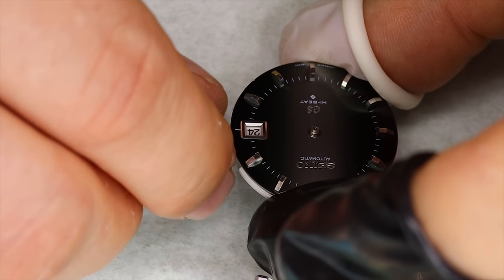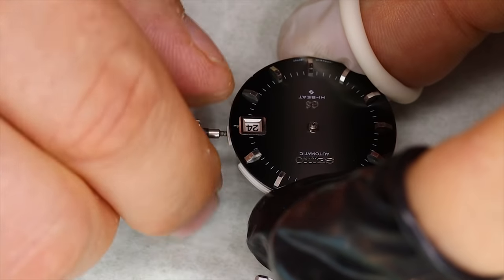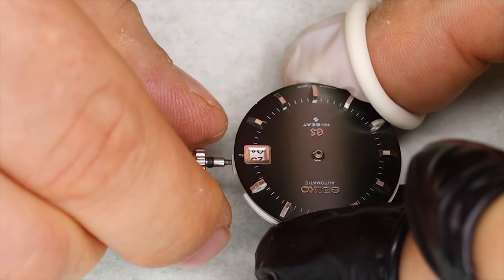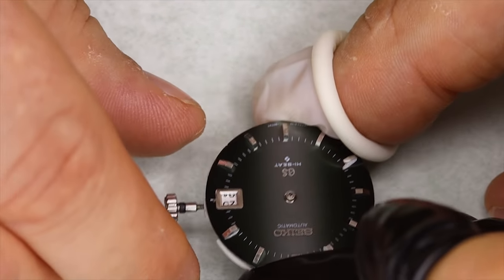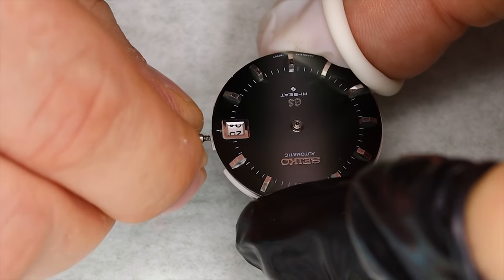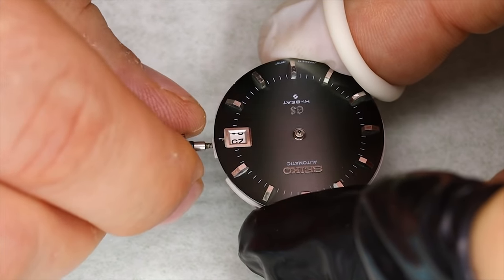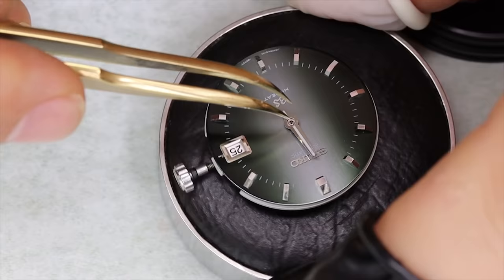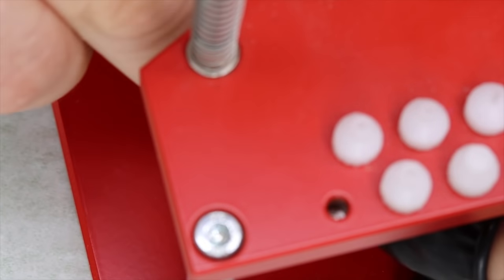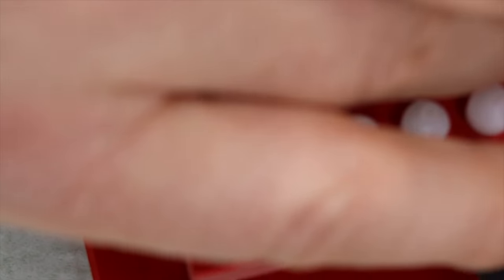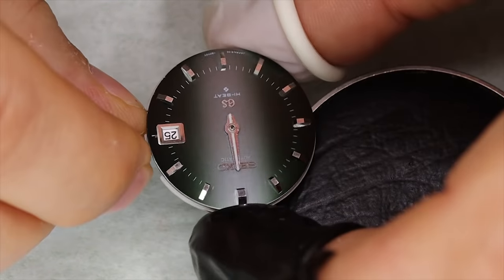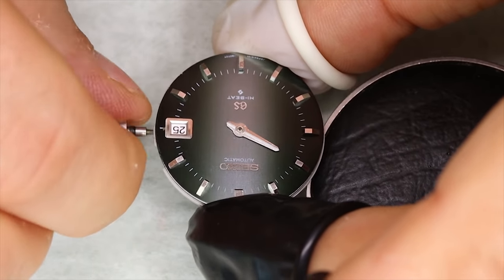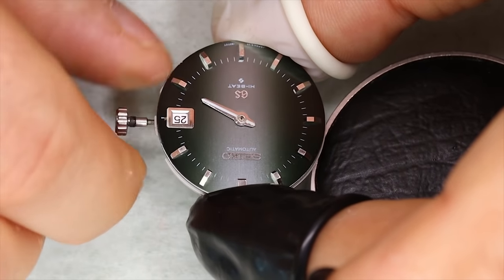Again testing to see that everything works after we put the dial on. One thing to pay particular attention to is that the dial hole is centered, so that the cannon pinion, the hour wheel and so forth, the tubes sticking out in the middle, are in the middle. If they're not, then you risk that the dial actually presses on the hands and either stops them or makes them run irregularly.